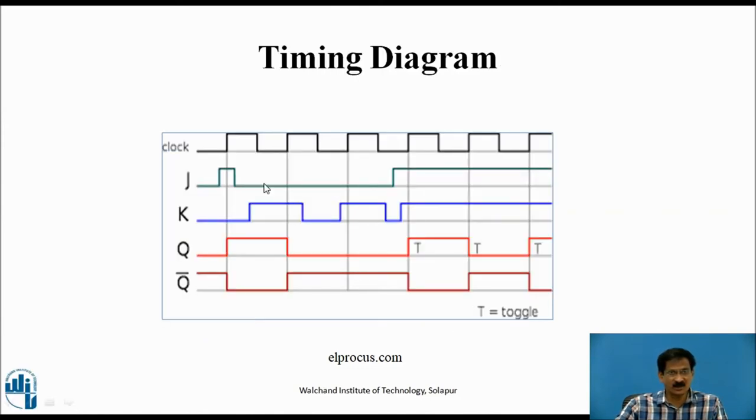So this is J and K flip-flop. With J equals 0, K equals 1, the Q-bar is 1. Here, now J is 1 and K is 1, the output becomes 1 during the first clock pulse. Second clock pulse, both 1, 1, output will now change to 0. So in this way the output will toggle.